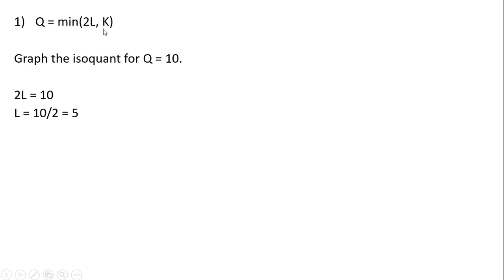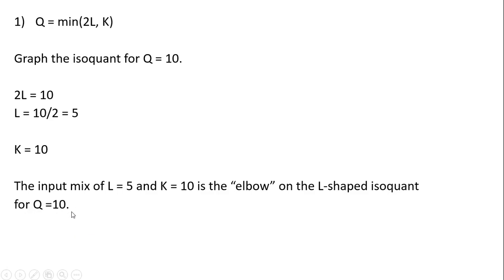The next step is this last term here, K, which is over here to the right of the comma. We're going to set that equal to the quantity of output, again in this case 10. So this is easy, K equals 10. The input mix of L equals 5 and K equals 10 is the elbow on the L-shaped isoquant for Q equals 10.